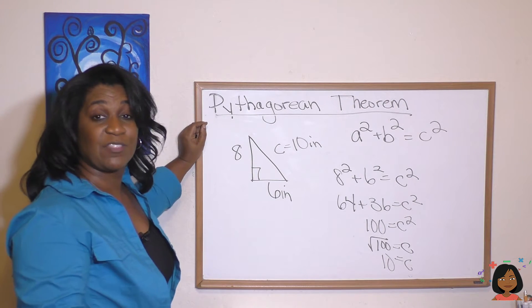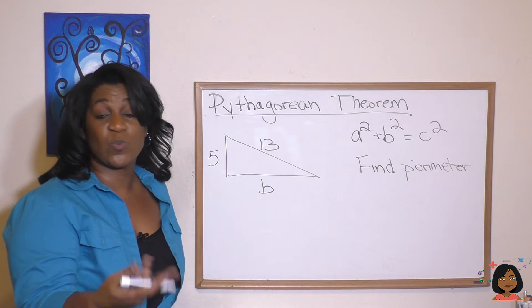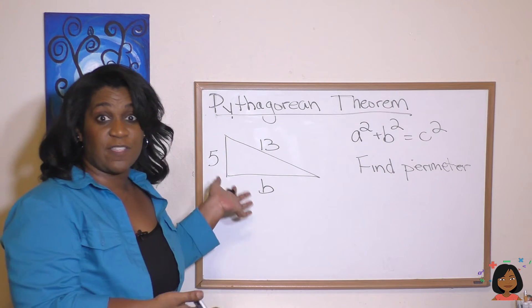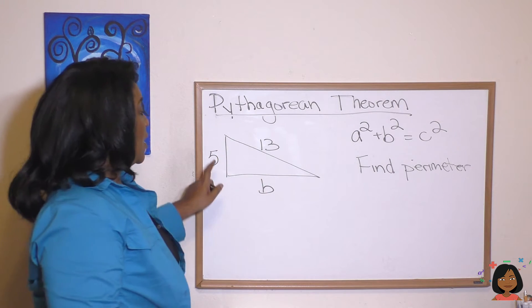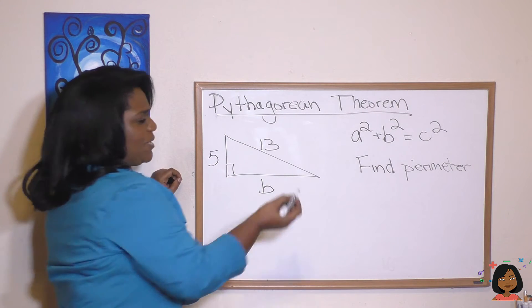That's how the Pythagorean theorem can be helpful. And because we can find missing sides, we can do things like find the perimeter. So let's solve for this and find the perimeter. So we have, oh, let's make it a right triangle first. And let's make it centimeters.